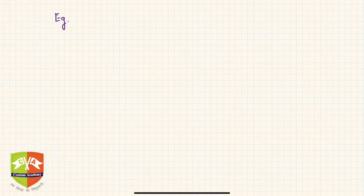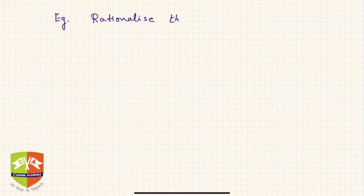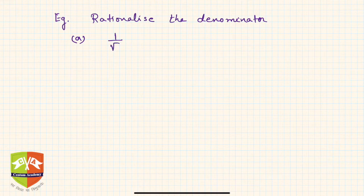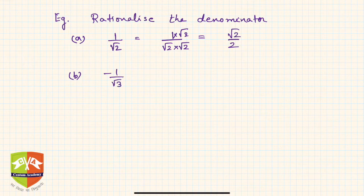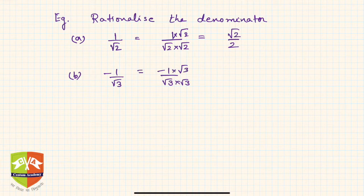Now let's look at examples of rationalizing the denominator. First example: 1 over root 2. Since it is a pure surd, multiply numerator and denominator by root 2, giving root 2 over 2 — the denominator is now rationalized. Second example: 1 over minus root 3. Multiply top and bottom by root 3, giving minus root 3 over 3 — rationalized.